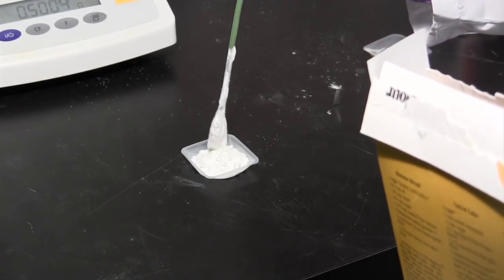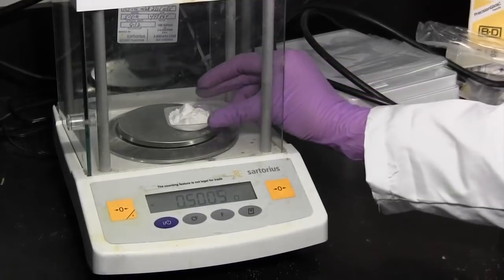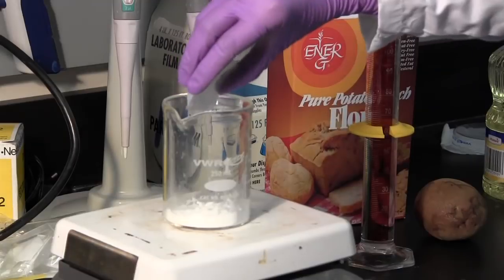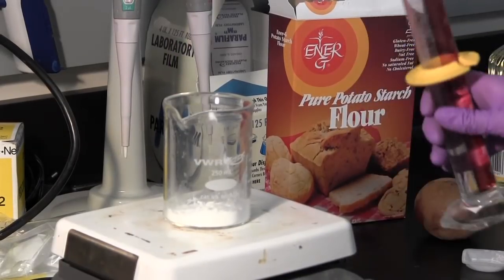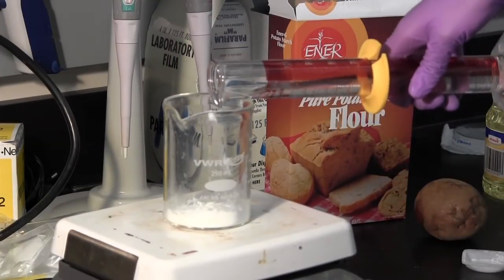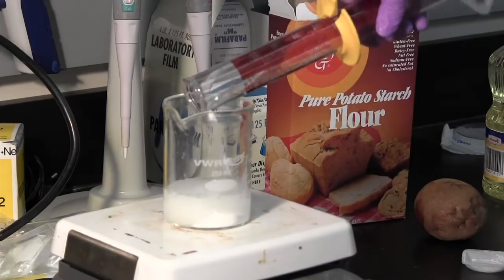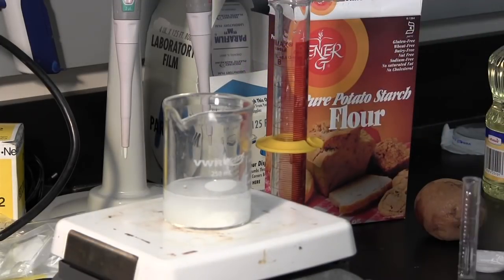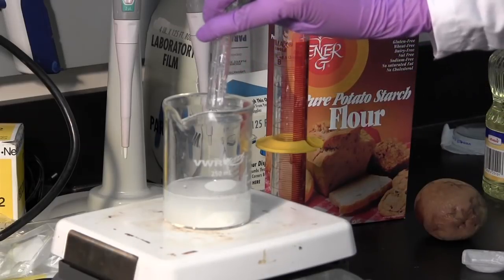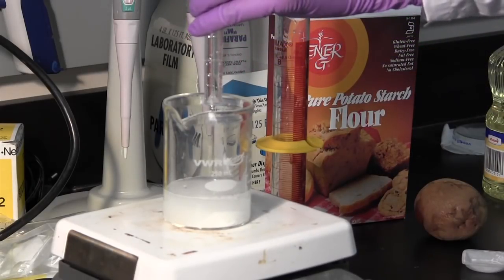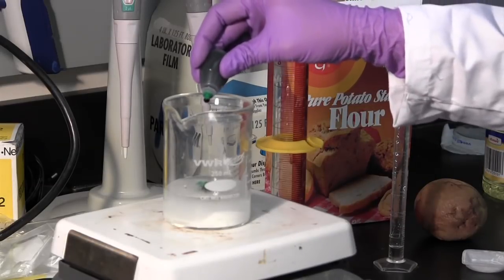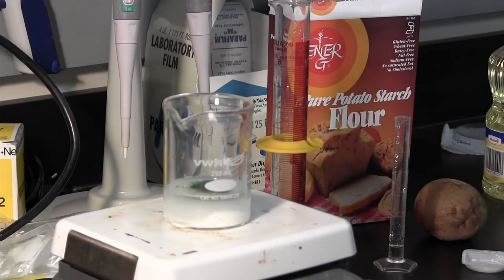Measure out 10 grams or about 1 tablespoon of potato starch. Add the starch to the beaker. To this we'll add 60 milliliters of tap water. Add 5 milliliters of vinegar. Add 5 milliliters of glycerin. It's very thick so it might take a while to pour out. Add 3 drops of your favorite food coloring to make a very exciting plastic.